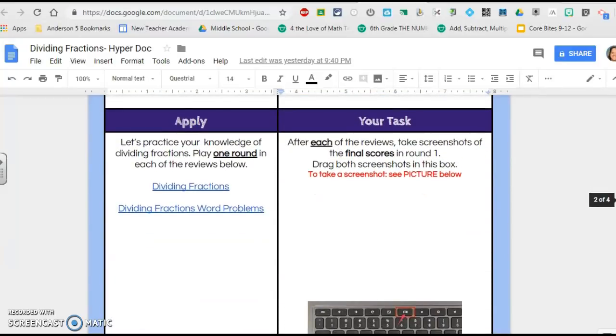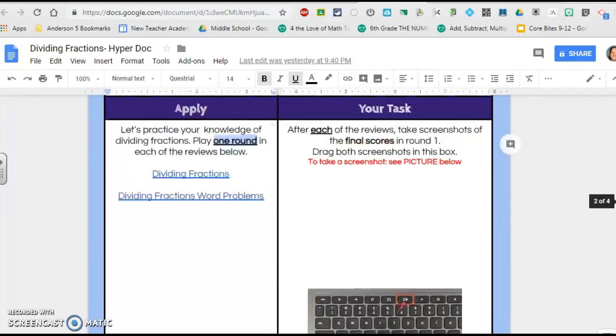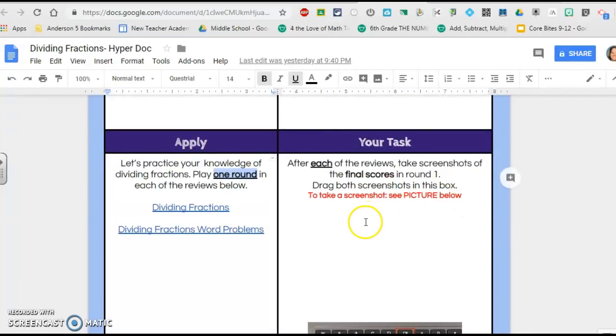Then, you're going to apply what you've learned. Make sure that you click on both of these links, and you're only going to play one round, and at the end of each round, it will give you a score. You're going to take a screenshot of your score, and then you're going to paste your screenshots here. So in this box, you should have two screenshots posted or pasted in with your scores.